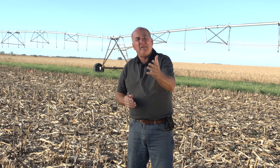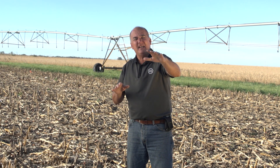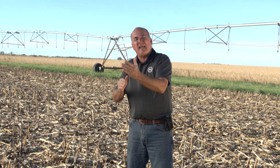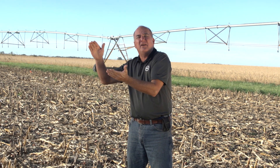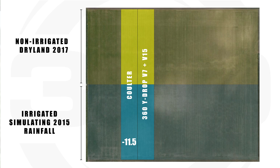...where we had 100 units on at V6 and came back with Y-Drop putting 100 units on at V15, when we jumped across the lane and applied it later in the year on the wet side, we added another 7.5 bushels. This makes common sense as a farmer — these are things we experience at large scale growing corn.